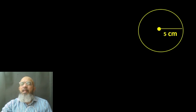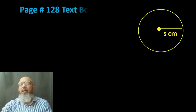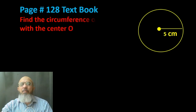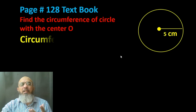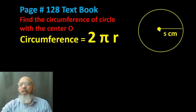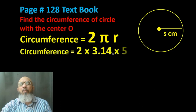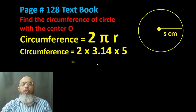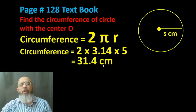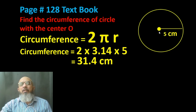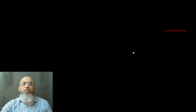Let's solve a question: the radius is 5 centimeters and we have to find the circumference. The formula is C = 2πr. Substituting: 2 × 3.14 × 5. First 2 × 5 = 10, then 10 × 3.14 = 31.4 centimeters. That is how you find the circumference when the radius is given.